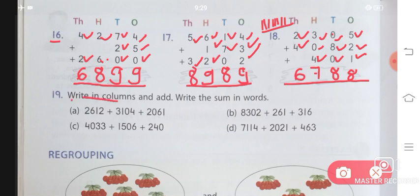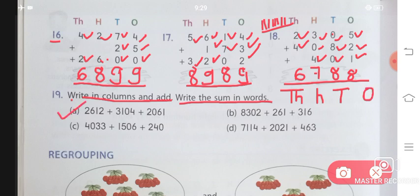Write in columns and add. Write the sum in words. First we need to write in columns. That means I have to write here: thousands place, then hundreds place, then tens place, and then ones place. Let us do part A first.